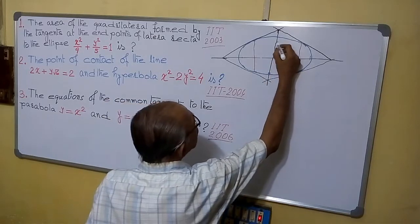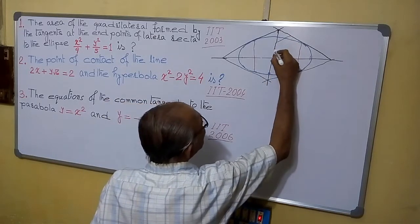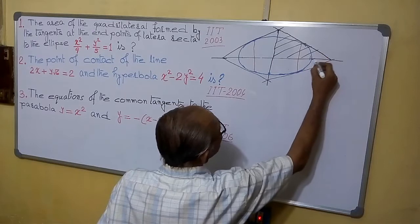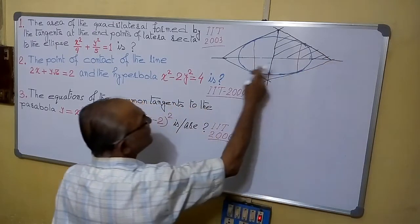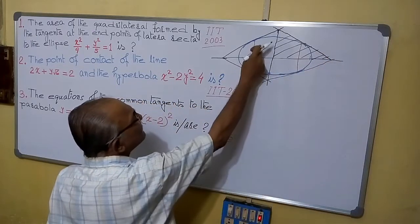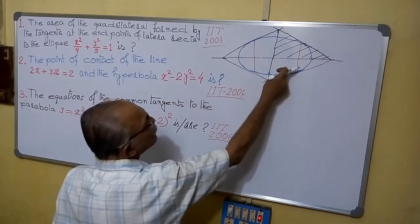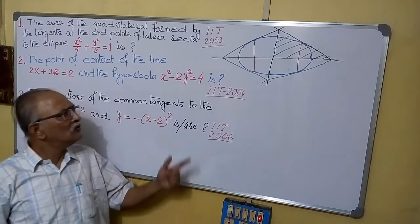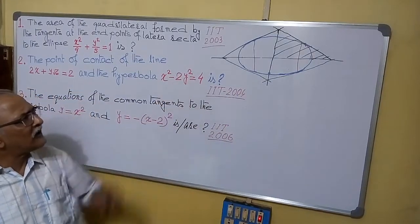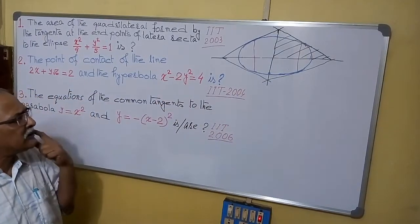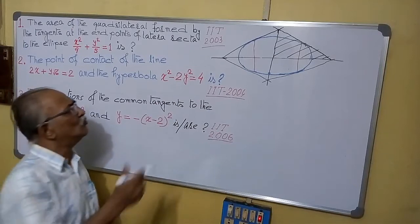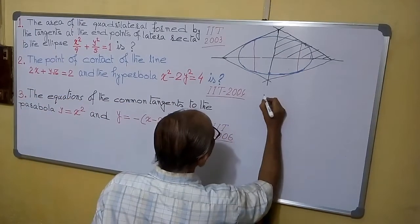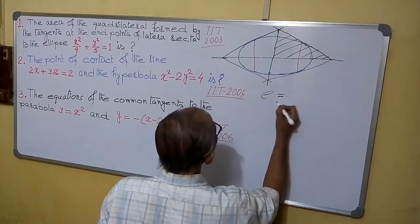If we can find the area of this triangle, you can see from symmetry all four triangles will be equal. So we have to find the area of that triangle and multiply it by 2. So first we will find E. E equals to...